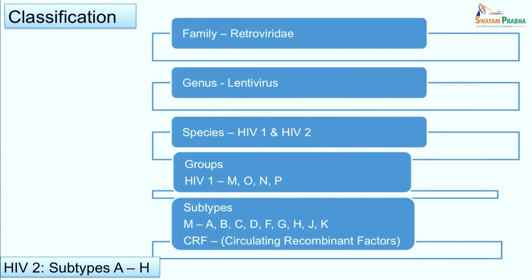Two species of HIV have been identified: HIV-1 and HIV-2. HIV-1 is the most predominant and is seen worldwide, whereas HIV-2 is mostly confined to West Africa, with cases also reported from India. Because of the high mutability of HIV, different groups and subtypes have been identified. HIV-1 has been classified into groups M, O, N, and P. Most HIV viruses fall into group M (major); those outside M are classified as O, then N, and recently a few distinct strains have been categorized as group P.